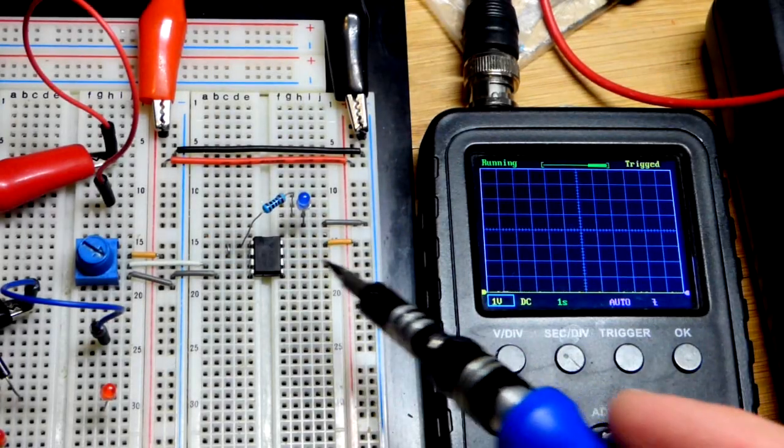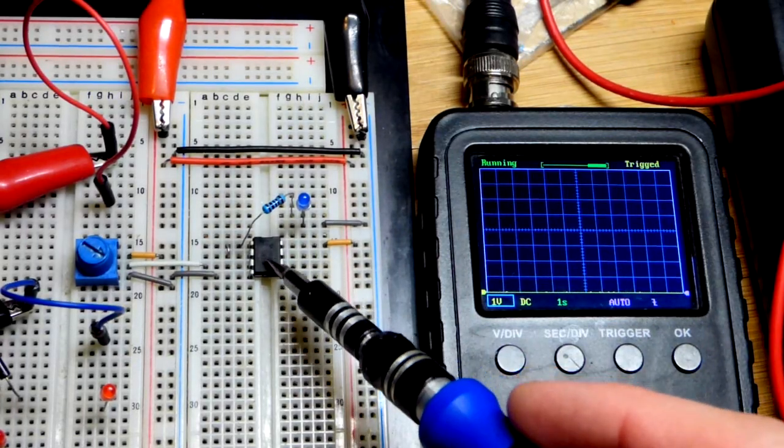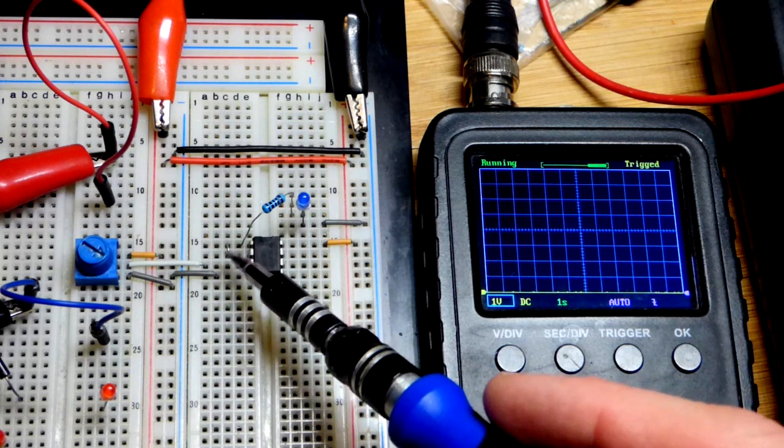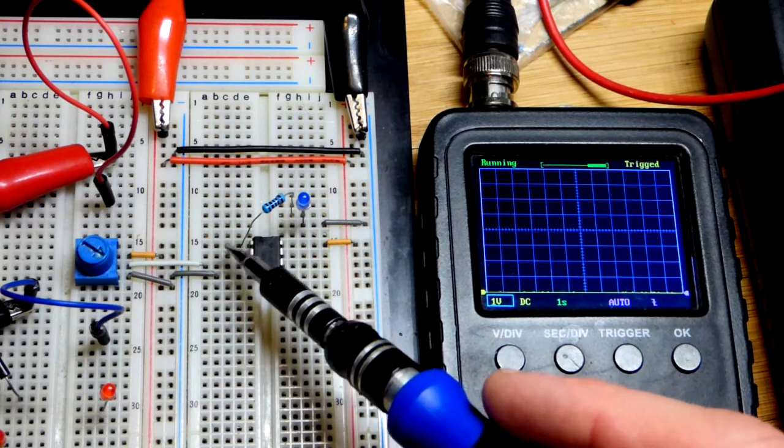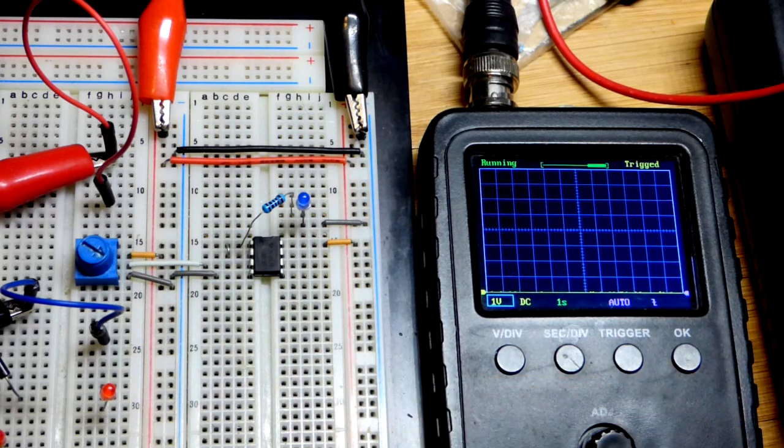So now in this video we're going to look at the op amp wired as a voltage follower. You can see it pretty good here, but there's a little jumper from the output to the inverting input right there. Just a little piece of metal.